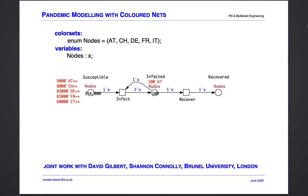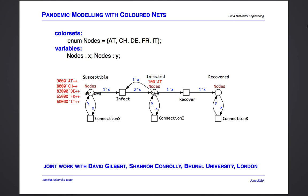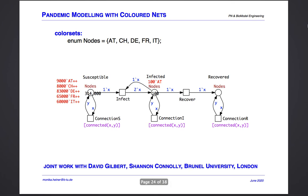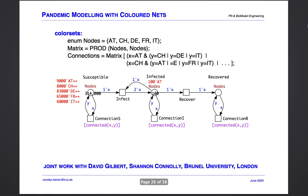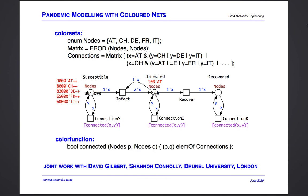To turn the epidemic model into a pandemic one, we add movement. But not all locations are directly connected, so we add guards constraining the movement by a binding expression. To implement the guards, we introduce a few more color definitions: we add the color set matrix, then introduce the direct connections as a subset type of matrix, and finally we define a color function to be used in the guards.